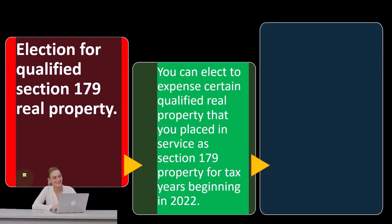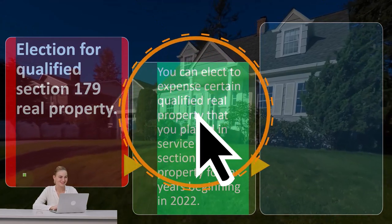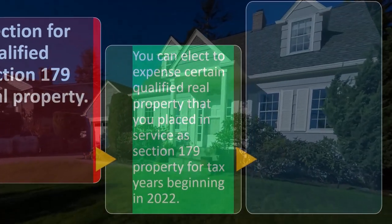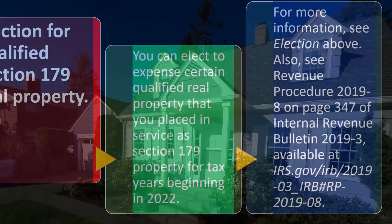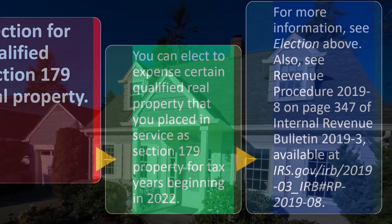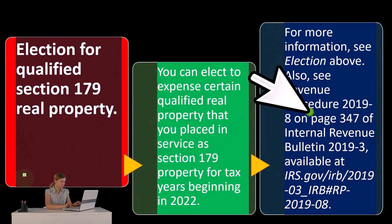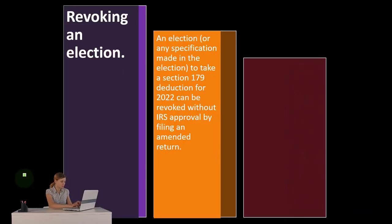You can elect to expense certain qualified real property that you placed in service as Section 179 property for tax years beginning in 2022. For more information, see the election guidance above and Revenue Procedure 2019-8 on page 347 of Internal Revenue Bulletin 2019-3, available at the IRS website.